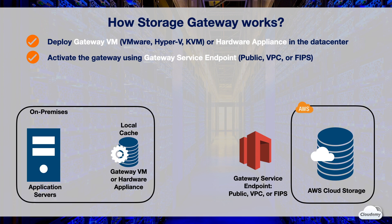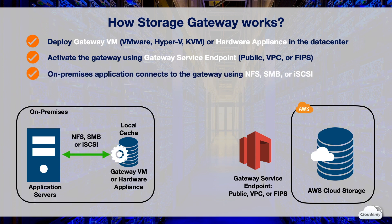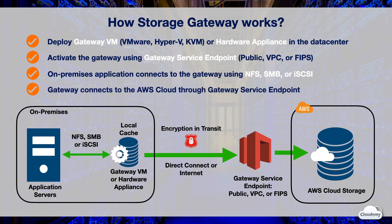FIPS stands for Federal Information Processing Standards. You can use the FIPS endpoint if you need FIPS-compliant communication. The on-premises application servers connect to the Storage Gateway through the VM or gateway hardware appliance using standard storage protocols such as NFS, SMB, and iSCSI. Storage Gateway connects to the gateway service endpoint over the internet or Direct Connect link, and through that connects to AWS cloud storage such as Amazon S3, Glacier, Glacier Deep Archive, Amazon EBS, and AWS Backup.